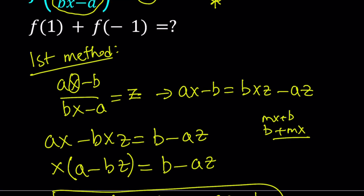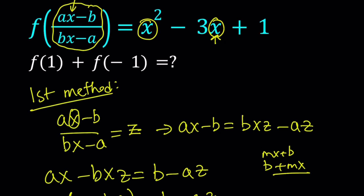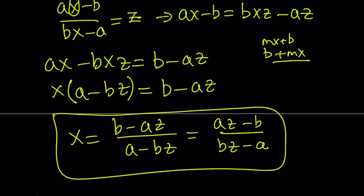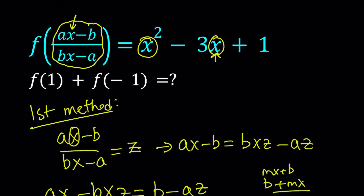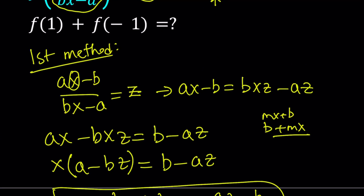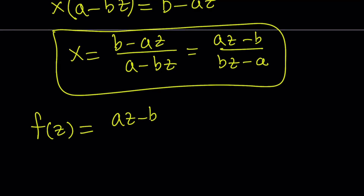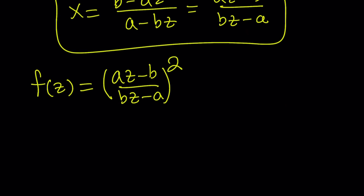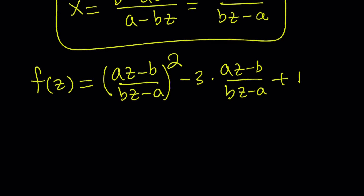Now I can replace x with that. So I know that x equals something and I can substitute it. That gives us f of — remember, this whole thing was called z — so it's just going to be f of z on the left hand side. On the right hand side, x replaced with az minus b divided by bz minus a. We have x squared, so we square that, and then minus three x plus one, which is minus three times x plus one. So that gives us pretty much f of z, and you can simplify this — square it, make a common denominator — but that's not needed.